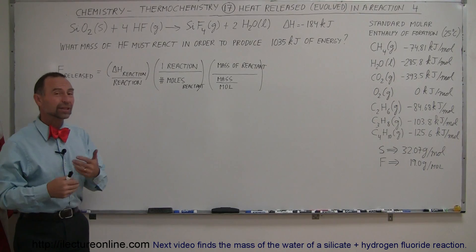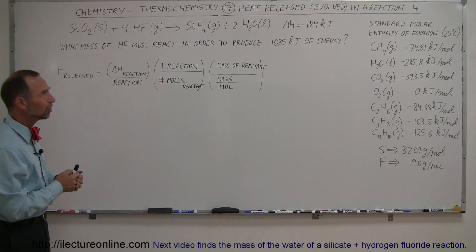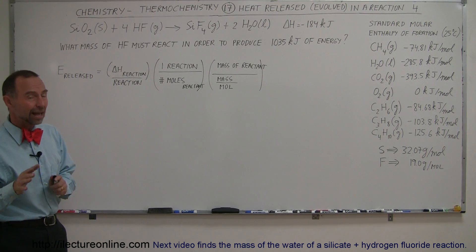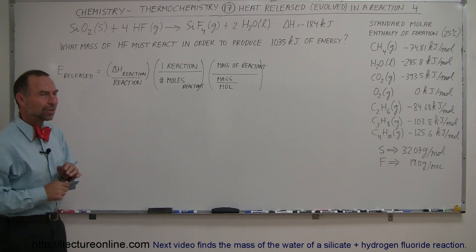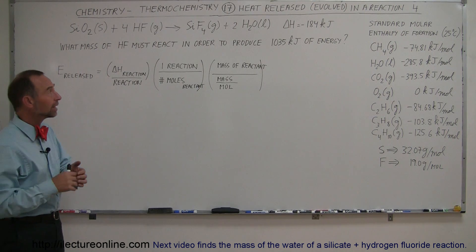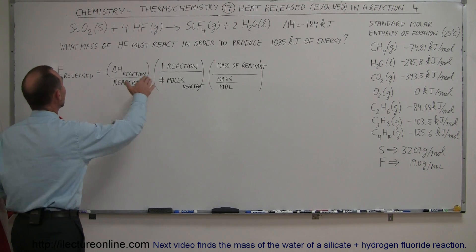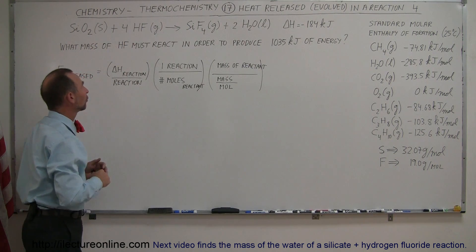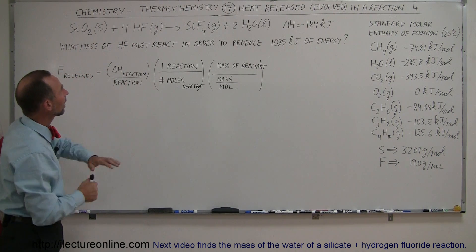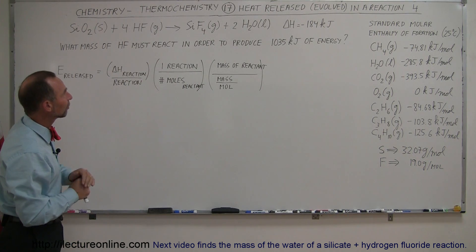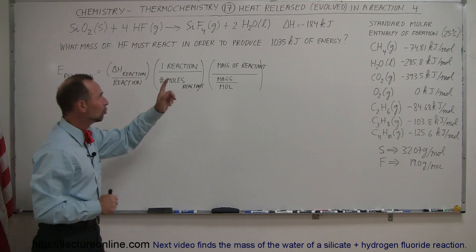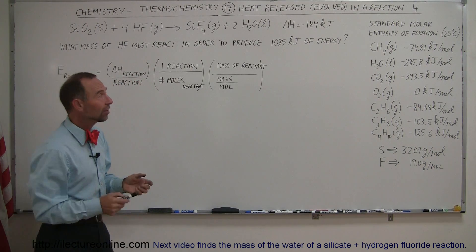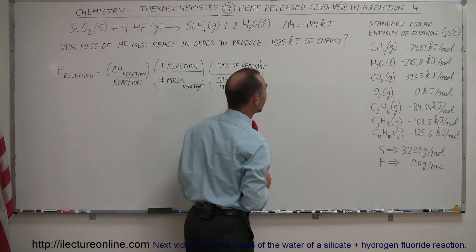Here's another example of how to work and deal with energy release in a reaction. In this case, we're not looking for the energy release because they tell you. We're looking for the amount of reactant needed — not in moles, but in grams. We have silicon dioxide as a solid reacting with hydrogen fluoride gas to give silicon tetrafluoride and two moles of liquid water. The energy release in that reaction is 184 kilojoules.